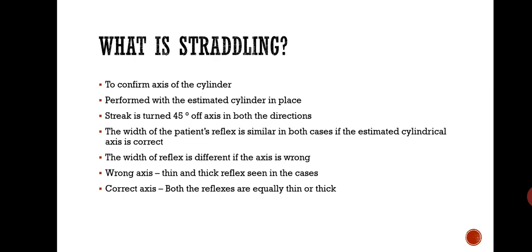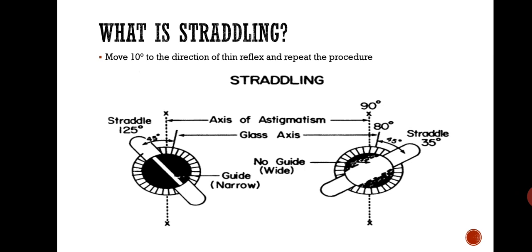You observe the width of the patient's reflex in each case. If the axis of your estimated cylinder is correct, you will get equality — the width of the reflex will be equal in both cases. In the case of a wrong axis, you will get two types of reflexes: one thin reflex and one thick reflex. If the axis is correct, you get an equally thick reflex in both meridians.